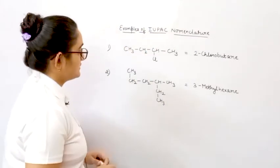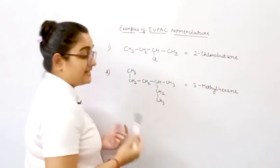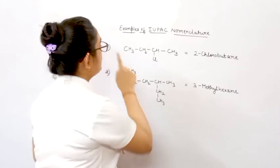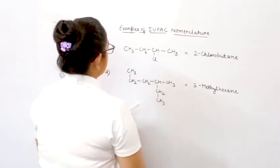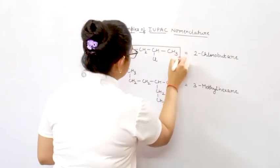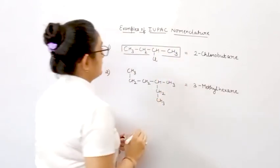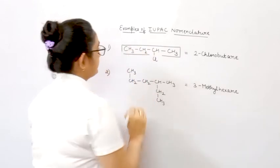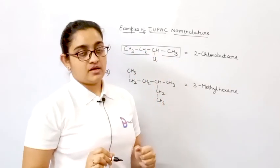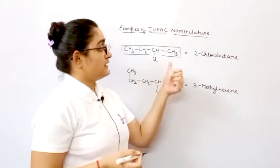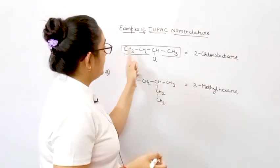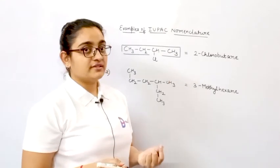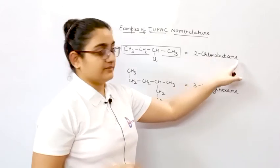Our first example is 2-chlorobutane. Let's see how to name this organic compound as per IUPAC nomenclature. The first step is to find the longest carbon chain. The second step is to find the root word — we can count 1-2-3-4, so 4 carbon atoms are there. For 4 carbon atoms, it's 'bute.' And all these carbon atoms are single bonded, so the primary suffix is 'ane' — the alkane system. So, bute plus ane gives us butane.